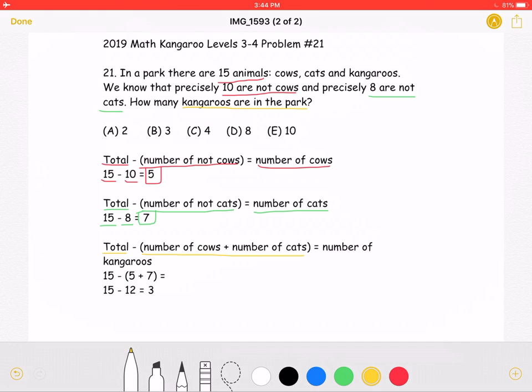To do this, we would take the total of 15 and subtract the sum of 5 and 7. As we found out there are a total of 5 cows and a total of 7 cats, which would give us 15 minus 12, which is equal to 3. There must be 3 kangaroos. This is answer choice B.